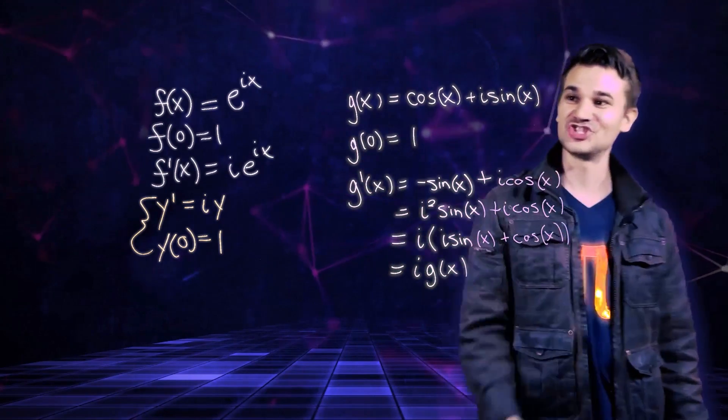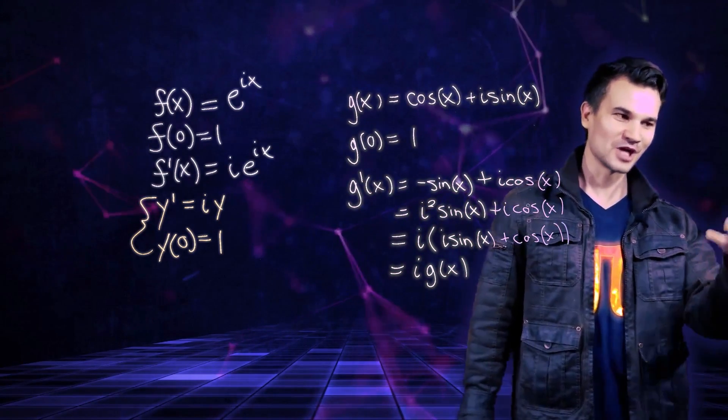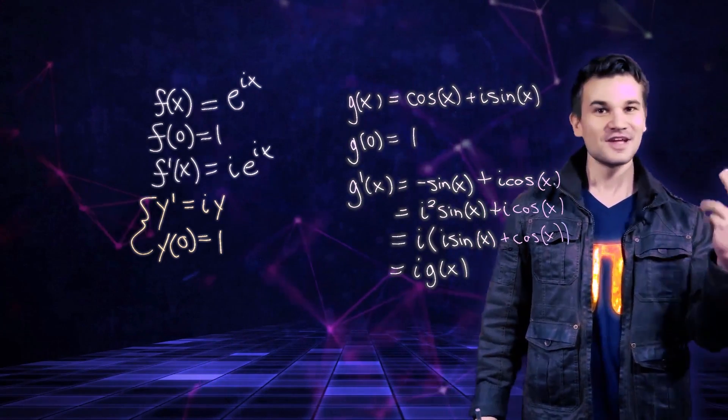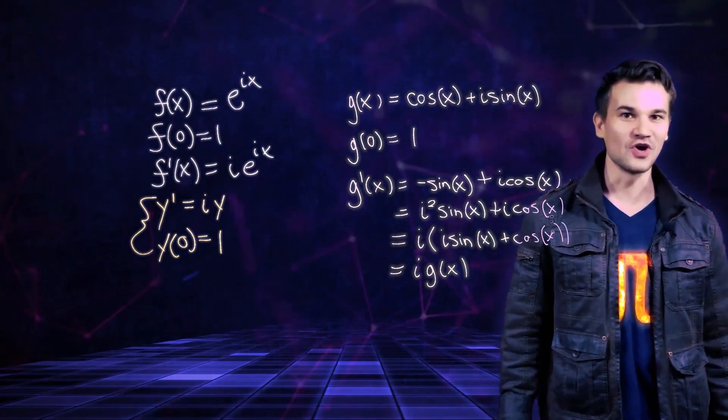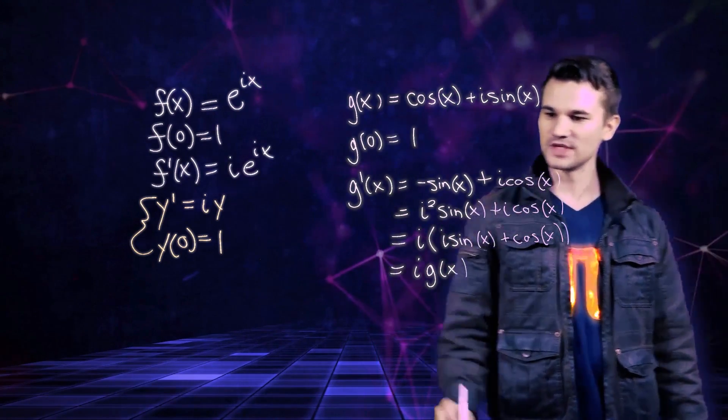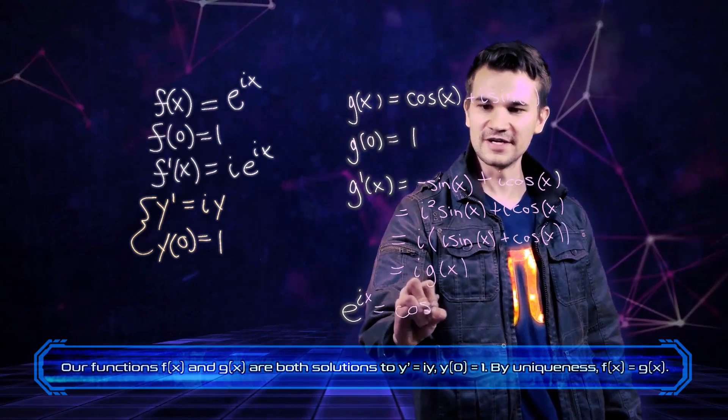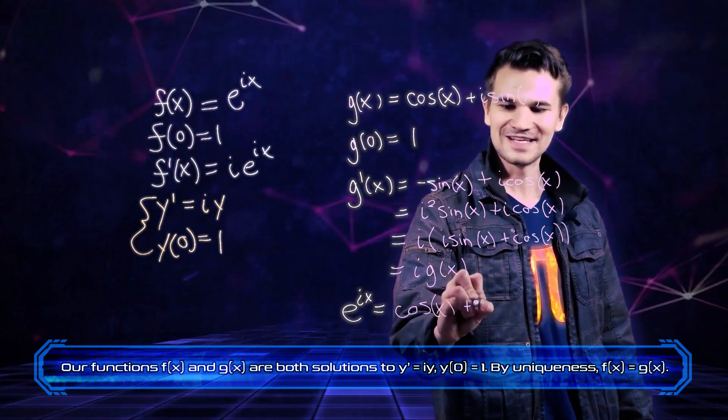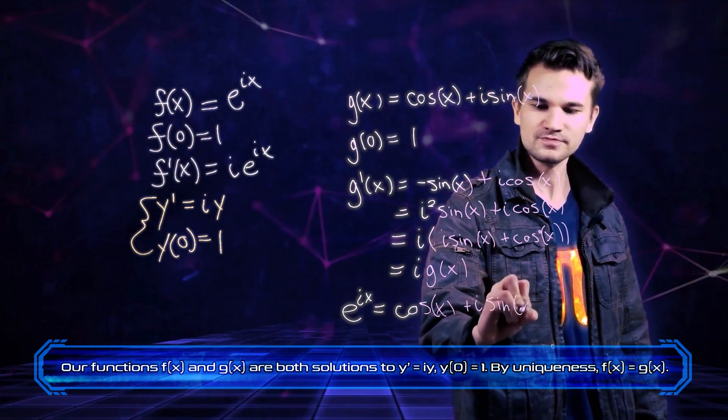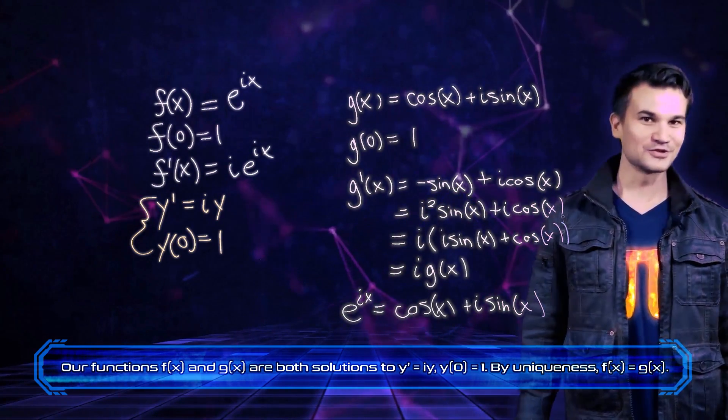So that tells me that this function g of x also solves the same differential equation coupled with the initial value. Therefore by Picard-Lindelof, these functions are the same, f of x equals g of x, and so we can say that e to the ix equals cosine of x plus i sine of x. So that's Euler's equation proven through differential equations using the Picard-Lindelof theorem.